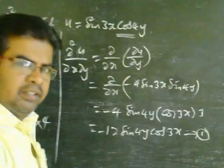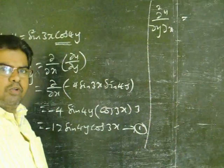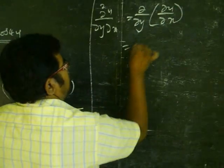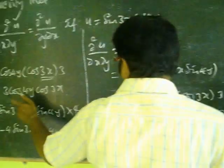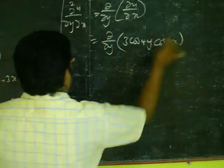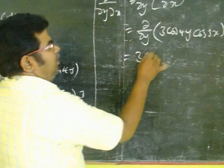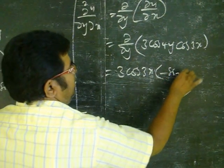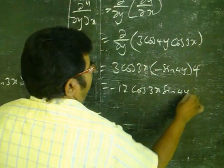Next we find the right-hand side. The right-hand side is ∂²u/∂y∂x, which is ∂/∂y of (∂u/∂x). That equals ∂/∂y of 3·cos(4y)·cos(3x). Here, 3 and cos(3x) are constants with respect to y, and the derivative of cos(4y) with respect to y is minus sin(4y)·4, which equals minus 12·cos(3x)·sin(4y). This is equation 2.